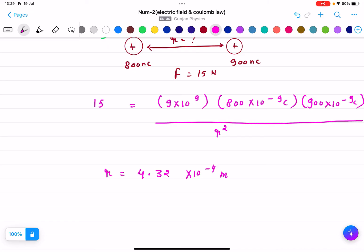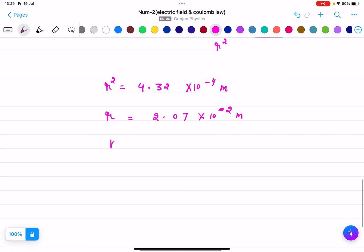This will be R square. So if I need to find R, it will be 2.07 into 10 to the power minus 2 meters. But we need the answer in centimeters. So it will be 2.078 centimeters. You can deduce the answer up to 2 places of decimal.